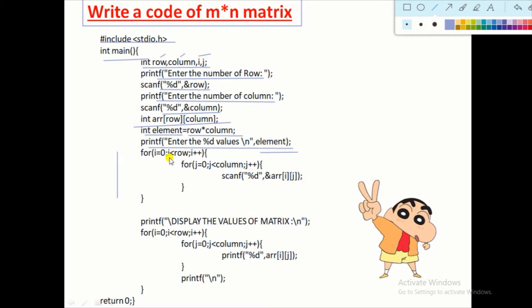Then we put a nested for loop here. One for loop is for rows and another for loop is for columns. We discussed how this nested for loop works in the previous video — if you haven't watched it, the link is in the description. Here we put conditions: i is less than row, and j is less than column. The row and column values come from memory where we stored the user's input. This nested for loop iterates every time and stores all values by getting input from the user using the scanf function.